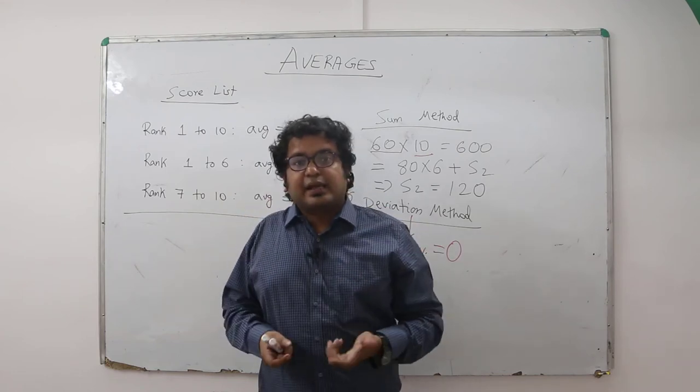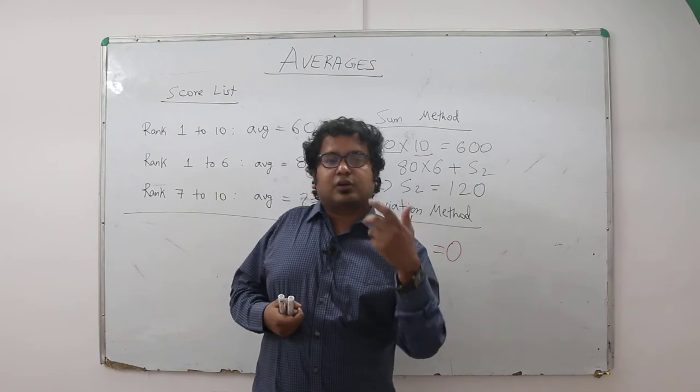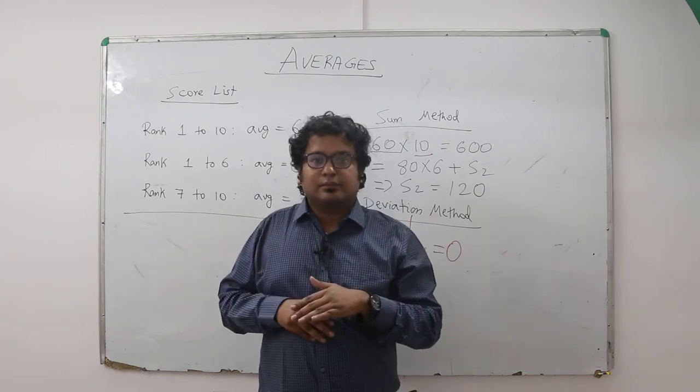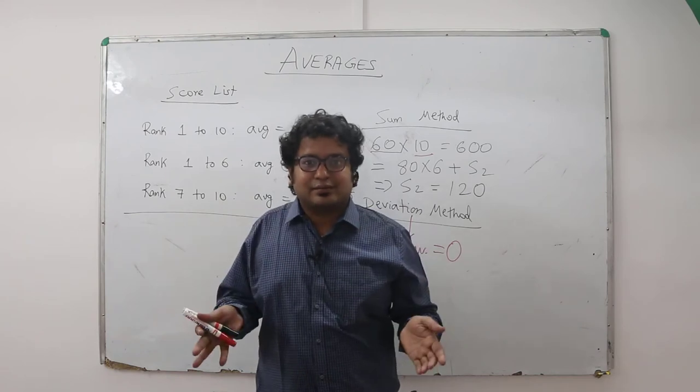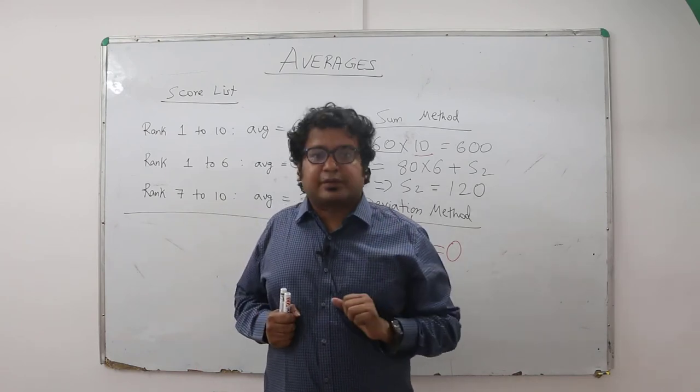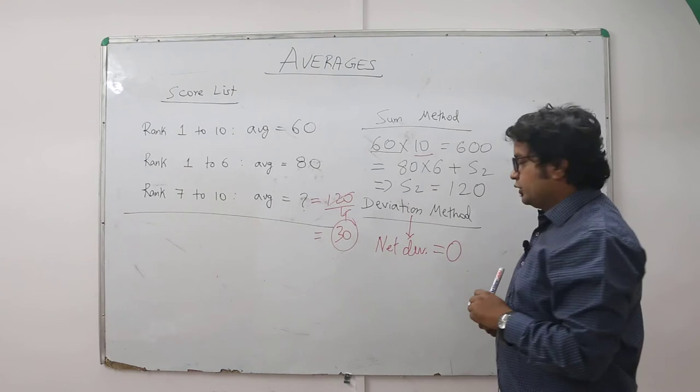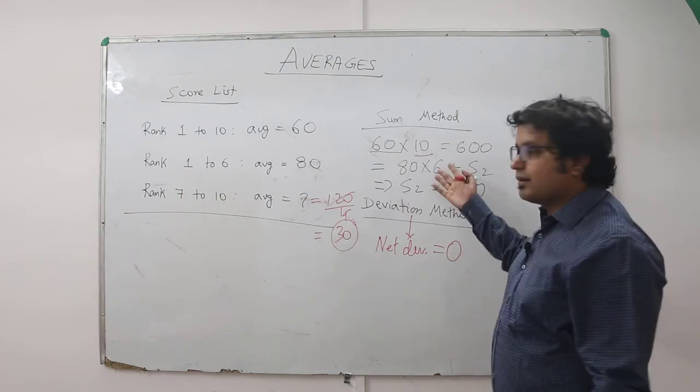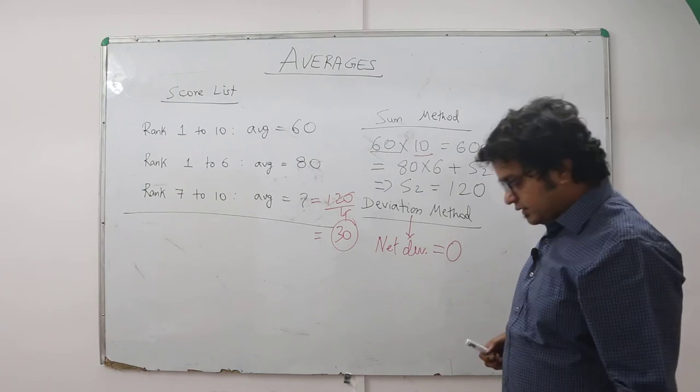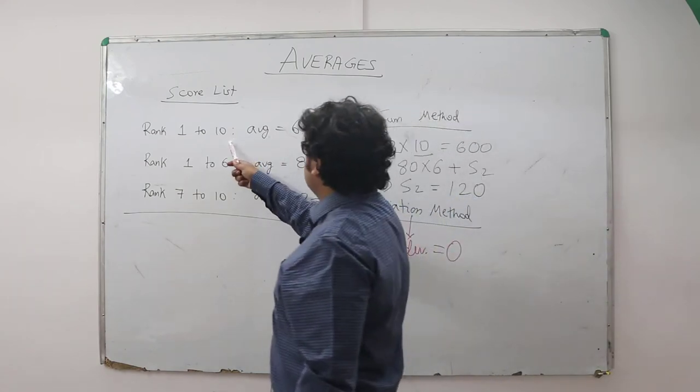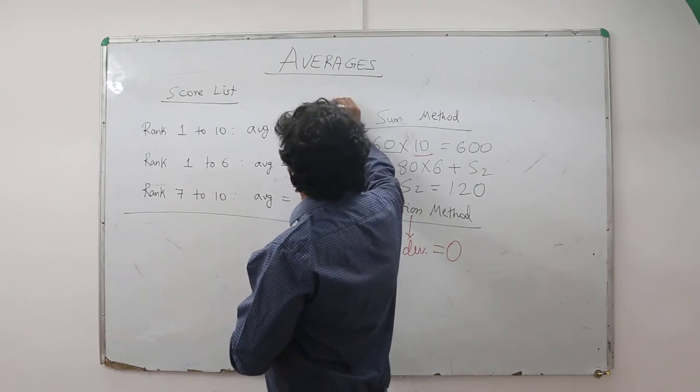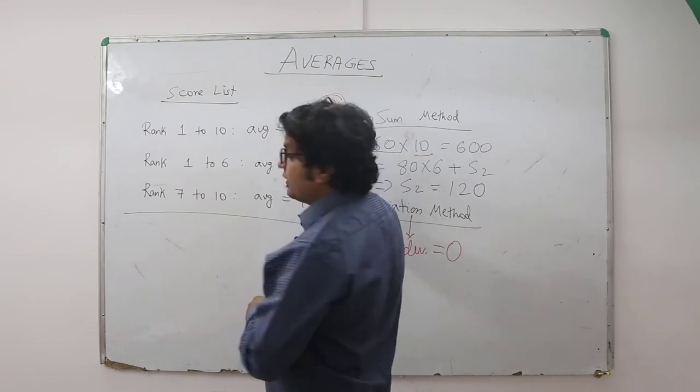That is the logic. And it is very commonsensical as well. An individual value can be more or less than the average, but overall deviation from the average has to be 0. Only then the average exists. So let us use this concept now. You won't be required to find out the sums then. First 10, that is the overall average, is 60. What is this? This is the overall average.